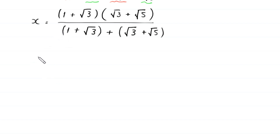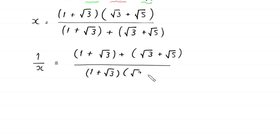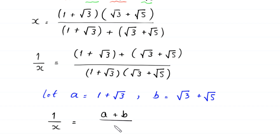Now we take the reciprocal of both sides. This gives 1/x = [(1 + √3) + (√3 + √5)] / [(1 + √3)(√3 + √5)]. We let a = 1 + √3 and b = √3 + √5, so the equation becomes 1/x = (a + b) / (a·b).